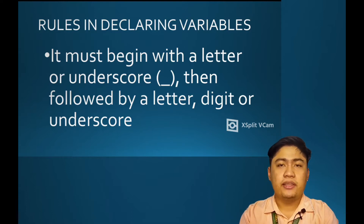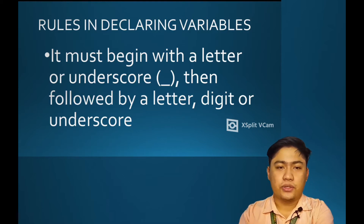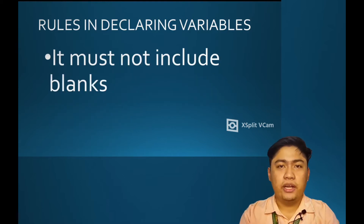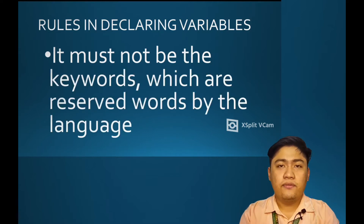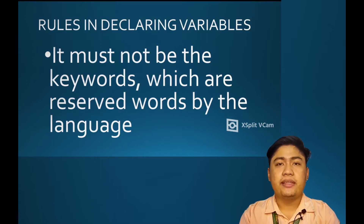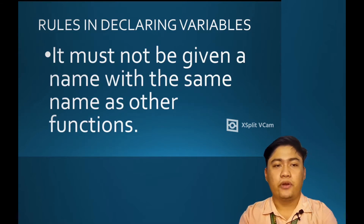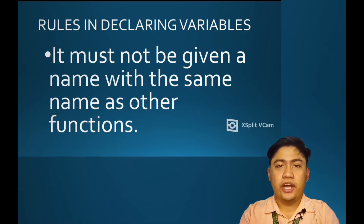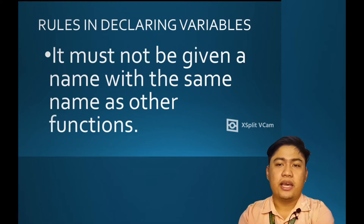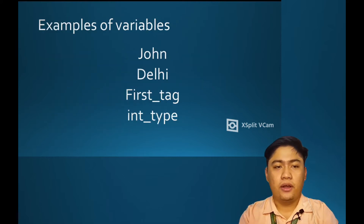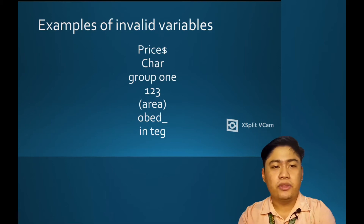Second, a variable must not include blanks. Third, a variable must not be the keywords which are reserved words by the language. And fourth, variables must not be given a name with the same name as other functions. I have here an example of valid variables, and for our next picture we have the invalid variables.